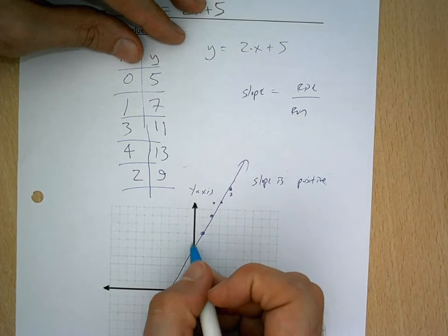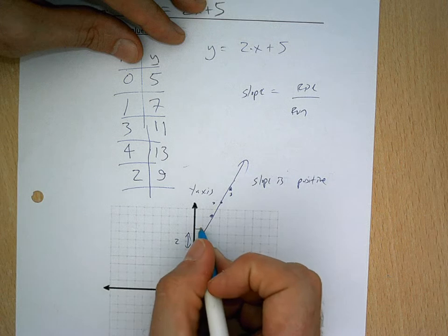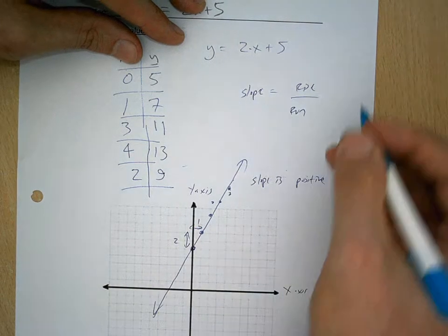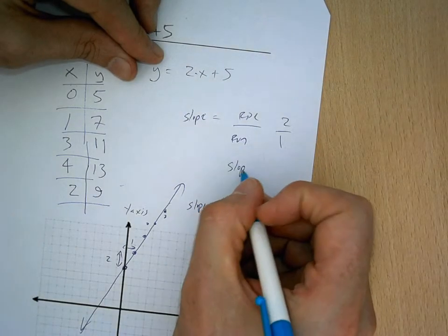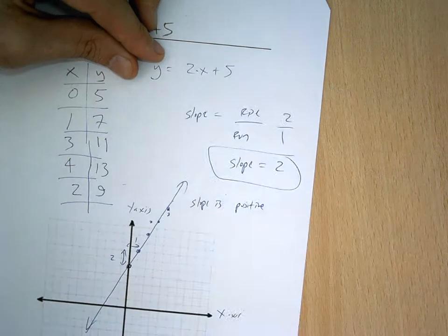So for example, here, if I look here, it goes up 2 and then over 1. So the rise over 1 is 2 over 1. So in this function, the slope is 2.